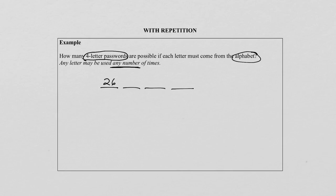In this particular example, it says that we can use the letters any number of times. So that means the second position will also be 26. The third position will also be 26, and the last position also 26.